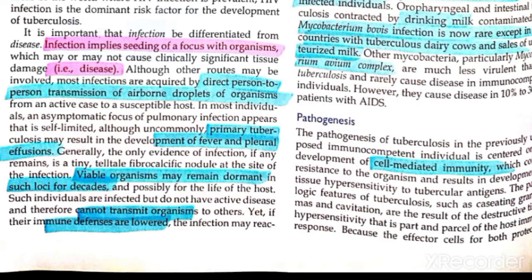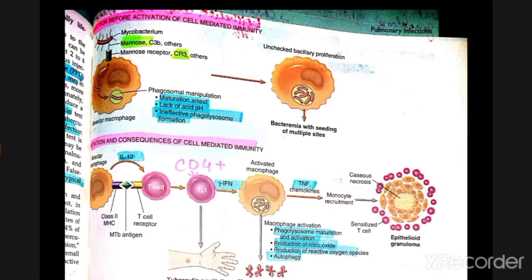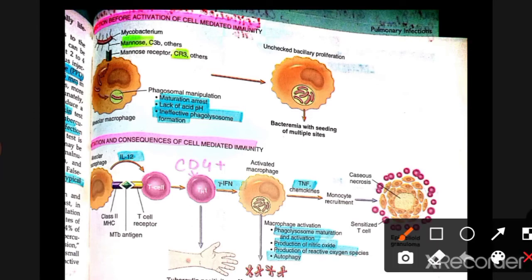If a patient doesn't have CD4-positive T cells, it becomes a very dangerous case. The main role of immunity against TB is CD4-positive T cells. When bacteria enter the lungs, the first line of contact involves macrophages.